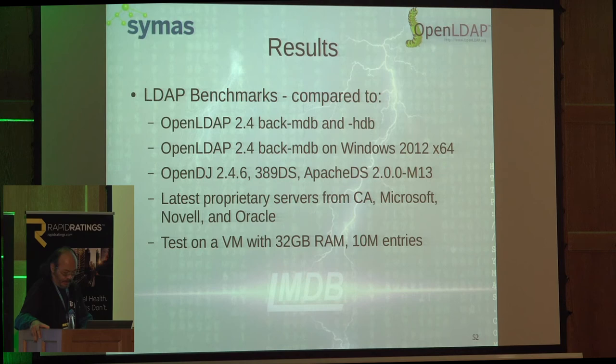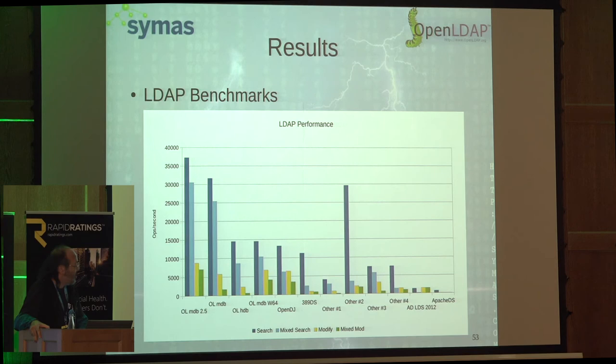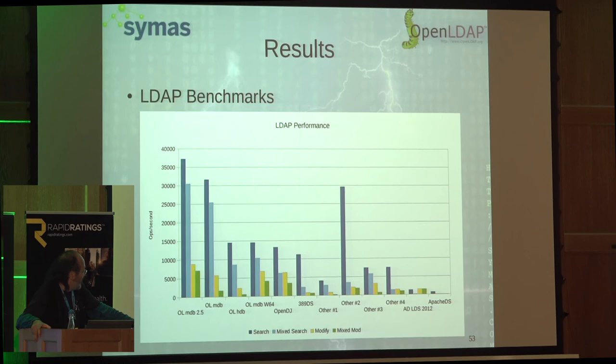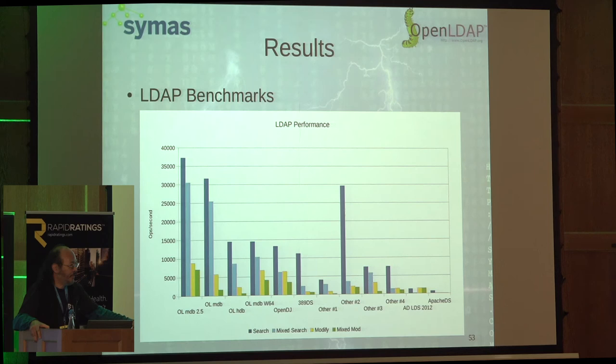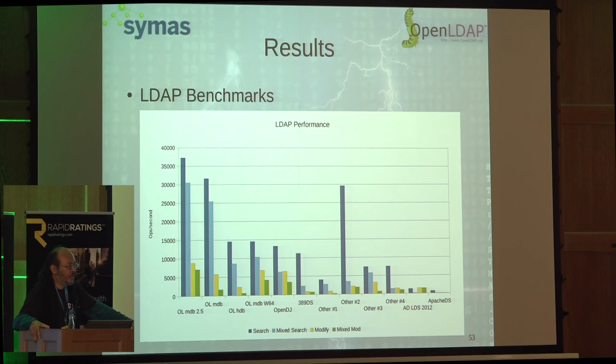Just one more set of graphs — these are LDAP directory servers, all the common ones on the market today. The version in OpenLDAP 2.4 is the second column; the version we're about to release in 2.5 is the left-most column. This shows speeds for a pure search job, a pure modify job, and a mixed search-and-modify job. One competitor performs very well in a pure read-only workload, but once you start throwing writes into the mix it bottlenecks because it's doing readers exclusive to writers.